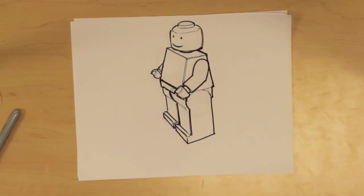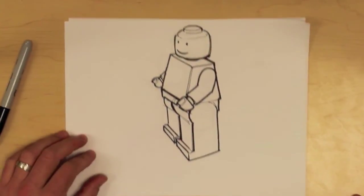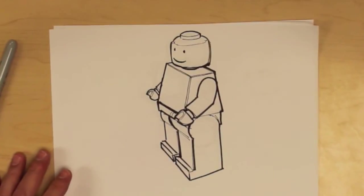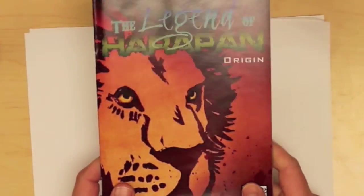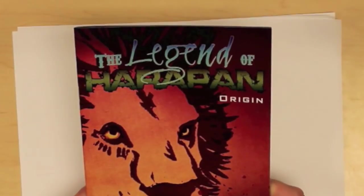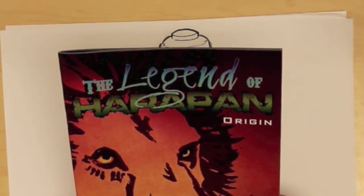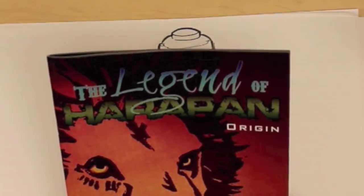So there you have it. How to draw a Lego man using basic structure of objects. Again this has been Shua. I'm the creator of The Legend of Hairpin. If you already picked up your copy, thank you so much. If you haven't, you can grab one on Comixology. And I believe starting today it's only 99 cents.